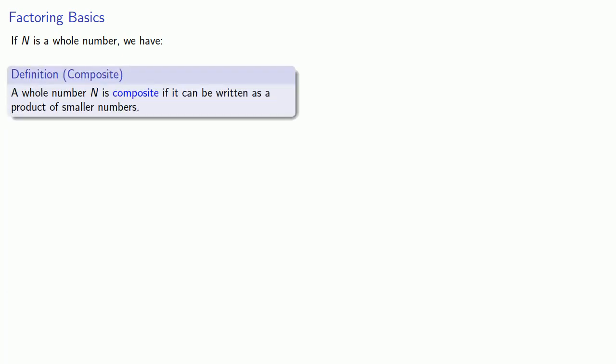So let's start out with a couple of basic ideas. If N is a whole number, we have the following definitions. A whole number N is said to be composite if it can be written as a product of smaller whole numbers.